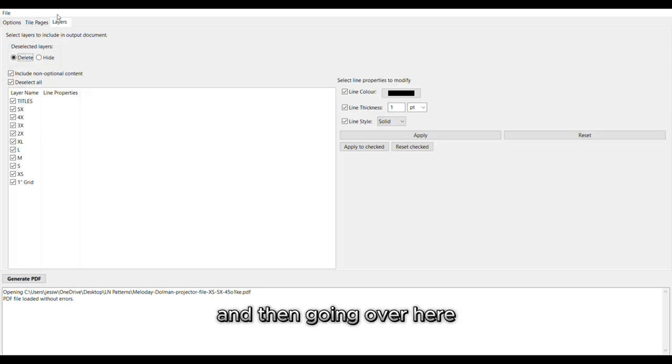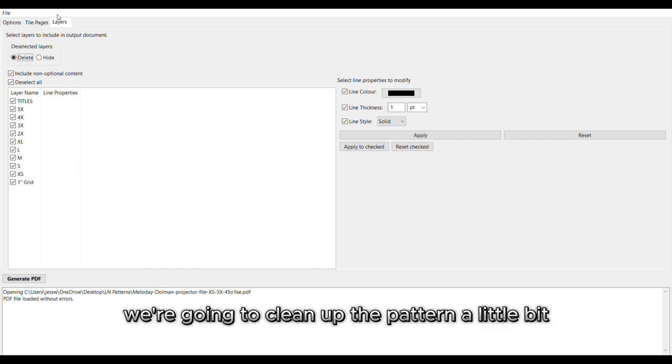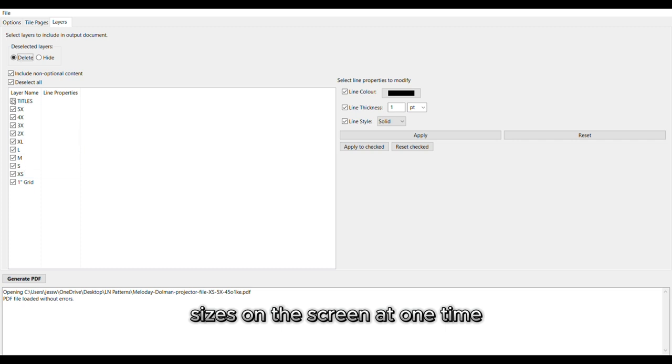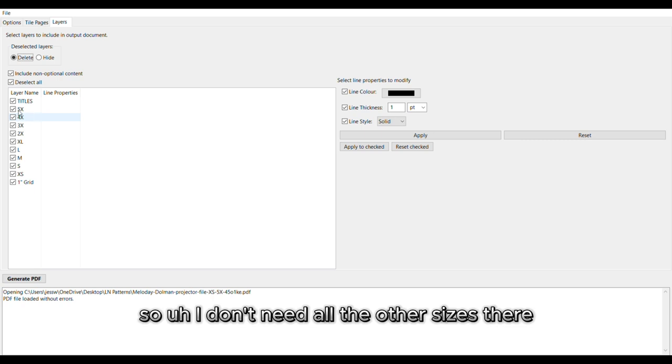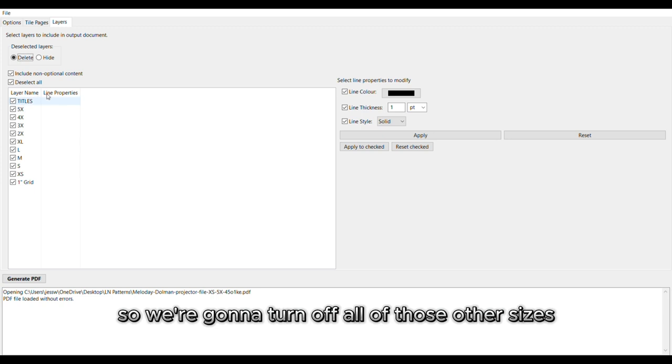And then going over here, we're going to clean up the pattern a little bit so that I don't have so many sizes on the screen at one time. So we're just going to deselect all of these because I only need two sizes. I use 4x and 5x for most of my Love Notions patterns. So I don't need all the other sizes there and they're just going to muddle my screen.